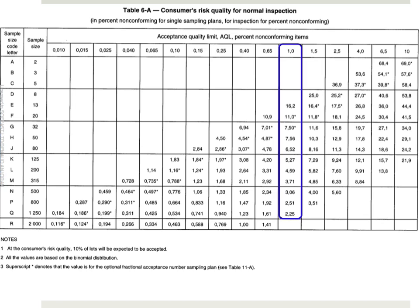In the standard, there's also a table showing that consumers' risk means 10% of the lots will be accepted even though they are above the AQL — even though the proportion of defects is above the AQL. So if your AQL is 1%, in theory you don't want a batch that has more than 1% defects. But with a sample size of 200, you might receive some batches with more than 4% defects. That should be a shock to many buyers, but that's how it works.